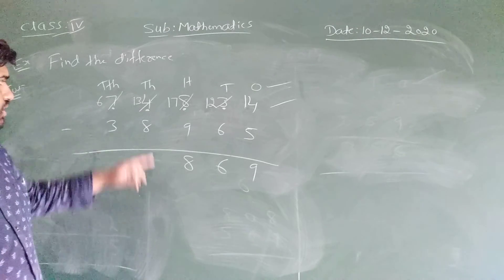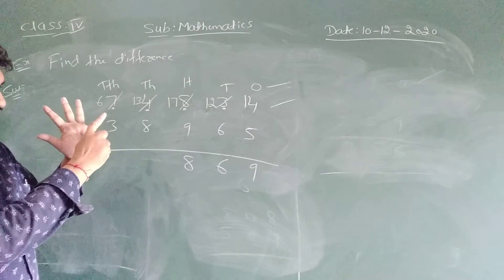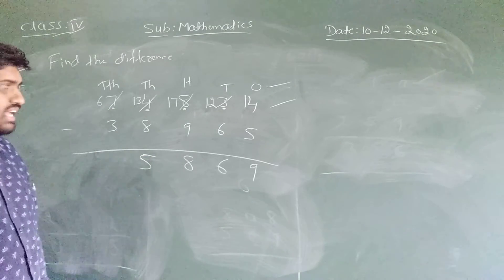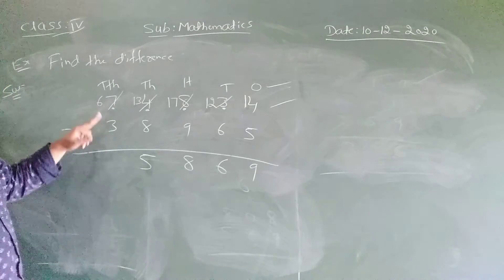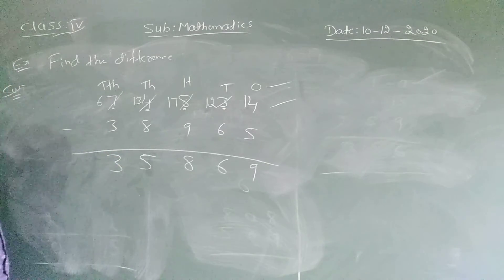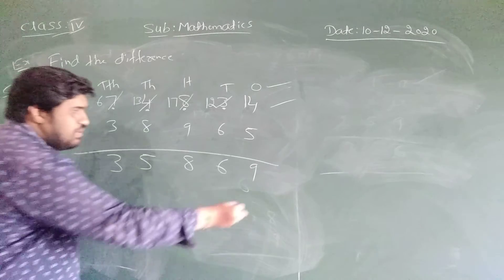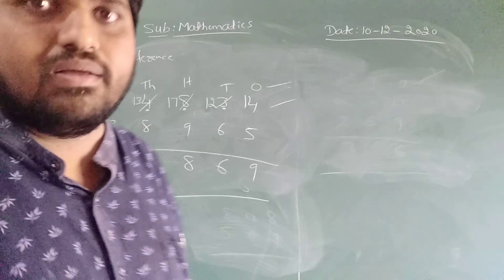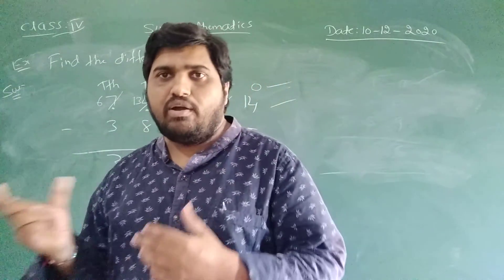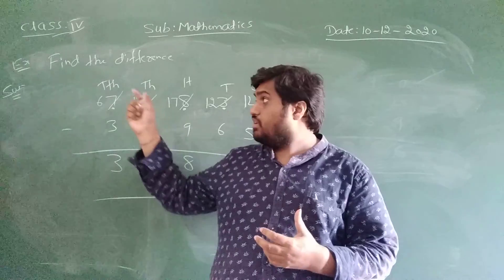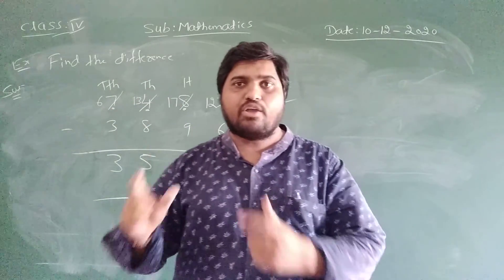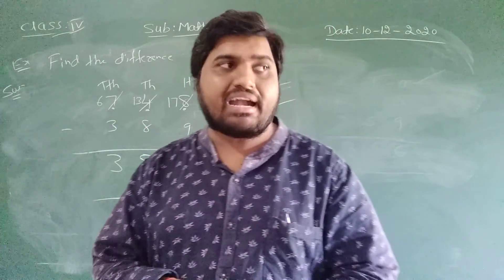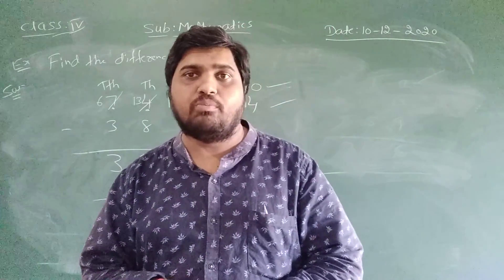Now 13 minus 8 equals 5. Next, 6 minus 3 equals 3. That's it — our final answer is 35,869. Are you understood children? Fine. In the next video I am going to solve a few more sums like this. You have to write these sums in your classwork and at the same time practice this in your homework. Thank you.